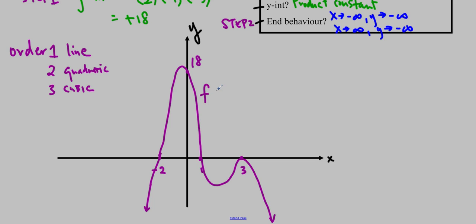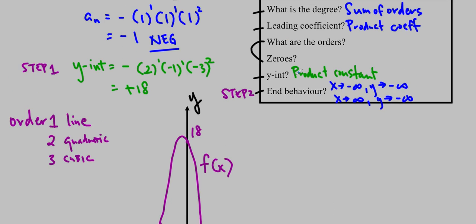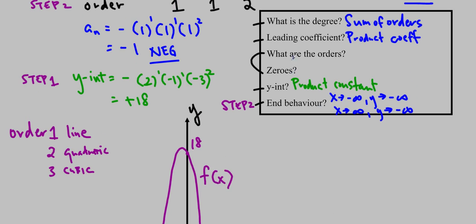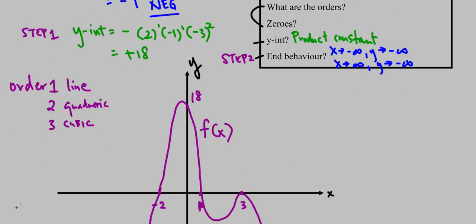The last thing is to label your graph, making sure the axes are labeled and all zeros are clearly marked. That's all you need to do: figure out the zeros, the order, the degree, the leading coefficient, the y-intercept, and end behaviors — then graph away.